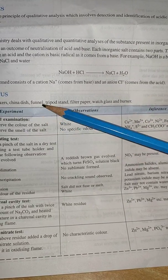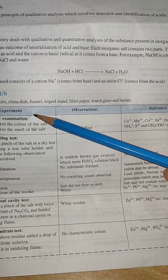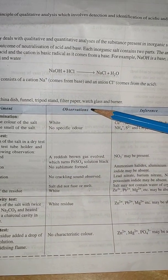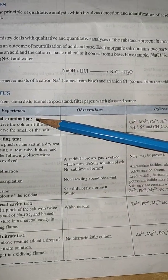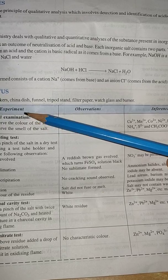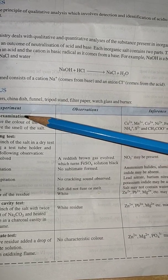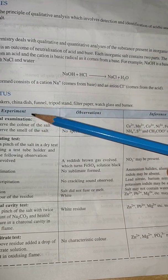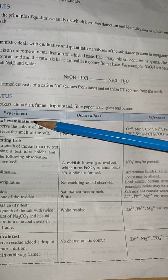Now at the end of the lab manual there are certain columns made: the first column is experiment, then observation, then inference. In the first column you will write physical examination. This is the first stage how you can detect or guess what kind of acidic radical and basic radical are present in the given salt.